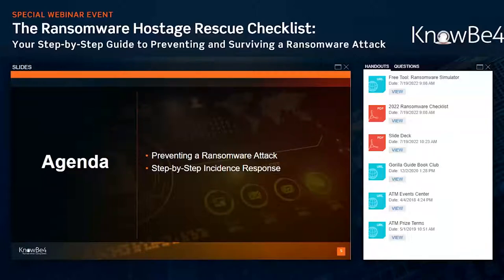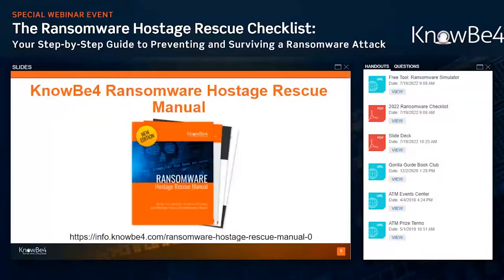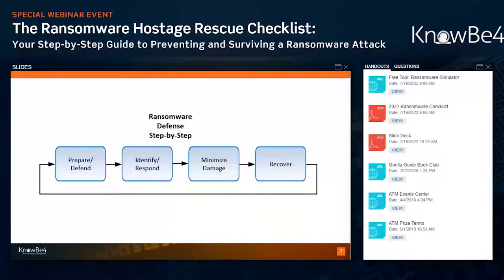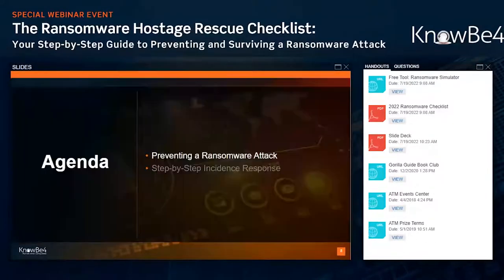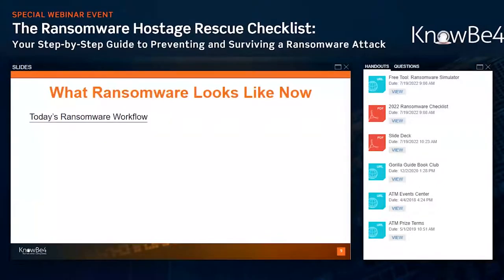We're going to start out by talking about how to prevent ransomware, then step-by-step incident response, and then take Q&A at the end. Most information I'm going to provide today comes out of the KnowBe4 Ransomware Hostage Rescue Manual, which you can download from the resources. When we're trying to worry about ransomware, you try to prepare and defend yourself against being hit. But if you think you were hit, we then have to identify it, verify you've been hit, respond to it, minimize the damage, and then recover. We'll be covering all of these phases today. It's very important to prevent a ransomware attack, and to prevent one, you need to understand how sophisticated most ransomware is today.